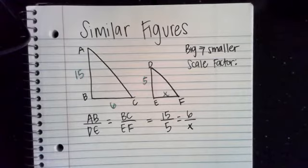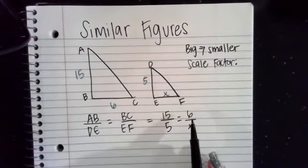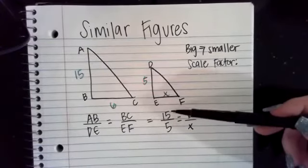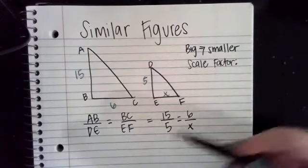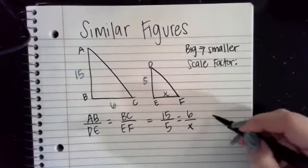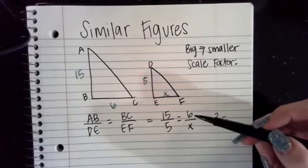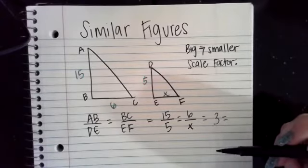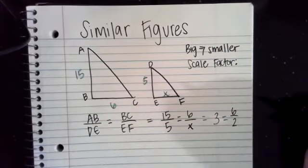So now we have this proportion, and now we are just going to solve it. There's a couple of different ways you could solve it. You could think about how are we getting from 15 to 6, what are we multiplying or dividing by, and then divide 5 by the same thing. Or you can look at the fractions as a whole and see, can you simplify this fraction? So if you notice, 15 divided by 5 simplifies to 3. We need to figure out 6 divided by what equals 3. Most of us can probably figure that out in our head, 6 divided by 2 equals 3, right?